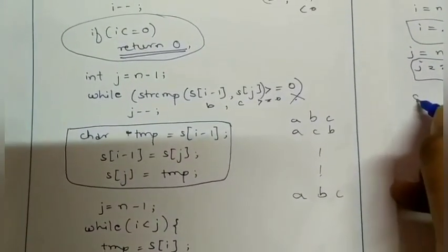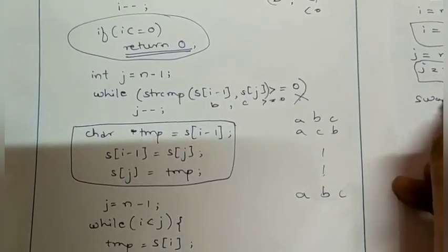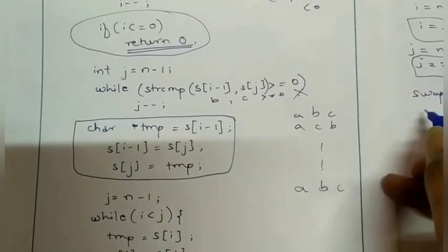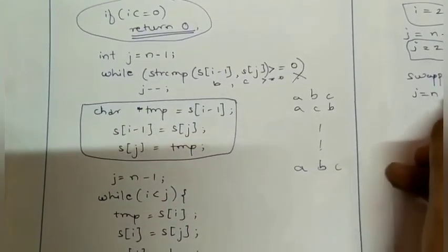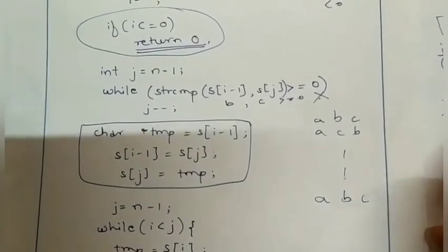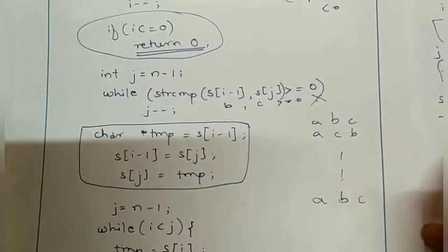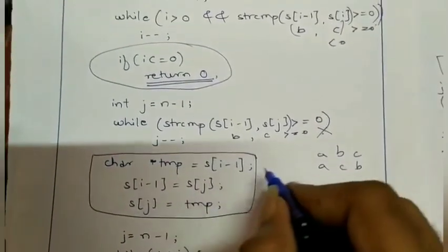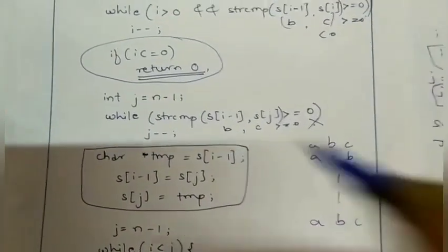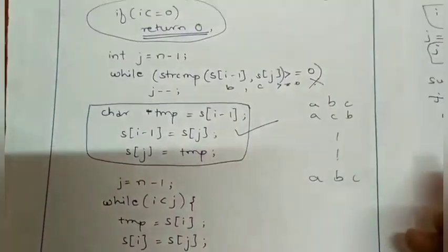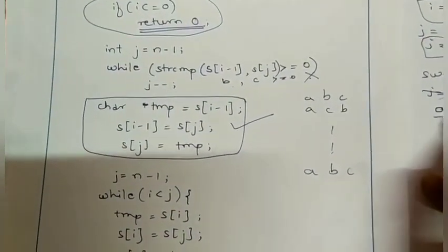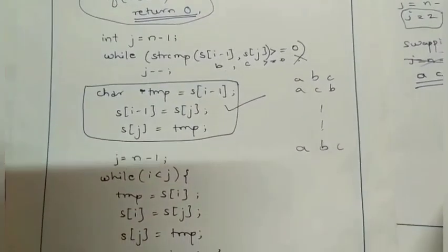Now comes the swap part. We are interchanging s[i-1] and s[j]. Before this we need to swap b and c. After swapping, our array becomes a c b.